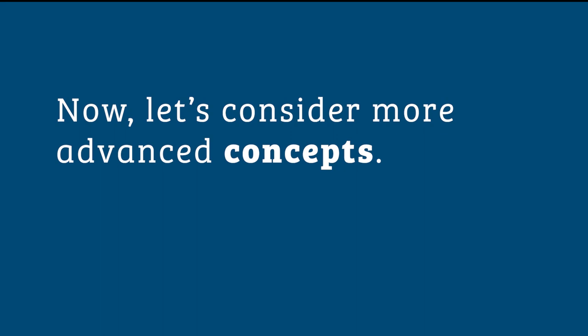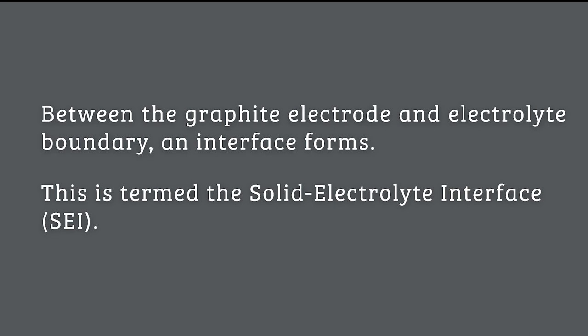What happens at the electrode-electrolyte interfaces? Between the graphite electrode and the electrolyte, a boundary and interface forms. This is referred to as the Solid Electrolyte Interface, or SEI. The SEI acts as a protection layer for the graphite electrode.